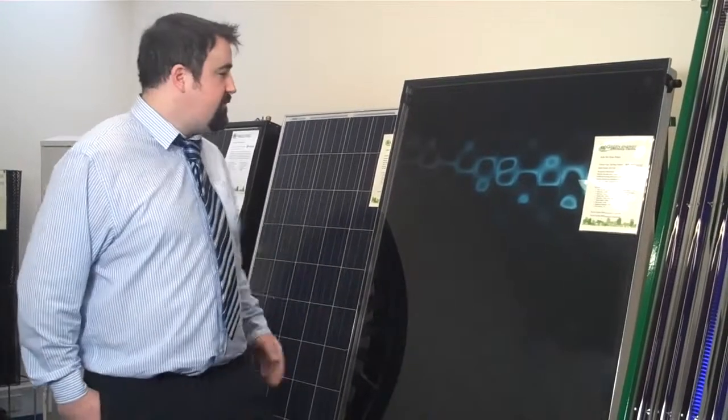In the centre we also have solar thermal systems. There are two types of solar thermal systems: the flat plate and the evacuated tubes.